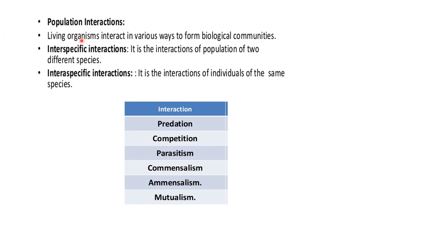Living organisms interact in various ways to form biological communities. There are two types: interspecific interaction (interaction between populations of two different species — for example a fish eating a plant) and intraspecific interaction (interaction among individuals of the same species — for example two fish interacting with each other). The different types of interspecific interaction are predation, competition, parasitism, commensalism, amensalism and mutualism.